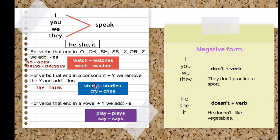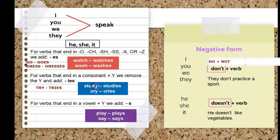Now for the negative form, we need the auxiliaries. For I, you, we, they, we use the auxiliary do, and the negative form of do is don't. For he, she, it, we use doesn't — because do ends with O, so we add E-S. Don't is the same as do plus not, and doesn't is does plus not.